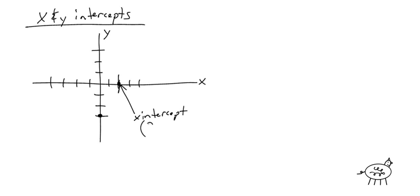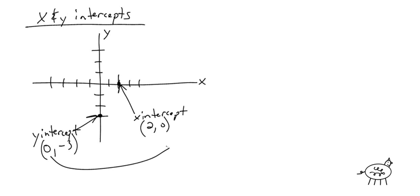The coordinate of the x-intercept is 2, 0. And this other point is called the y-intercept, because it's crossing the y-axis. That coordinate is 0, negative 3. Notice that each of these has a 0. If you're looking for the y-intercept, the x-value is 0. If you're looking for the x-intercept, the y-value is 0.